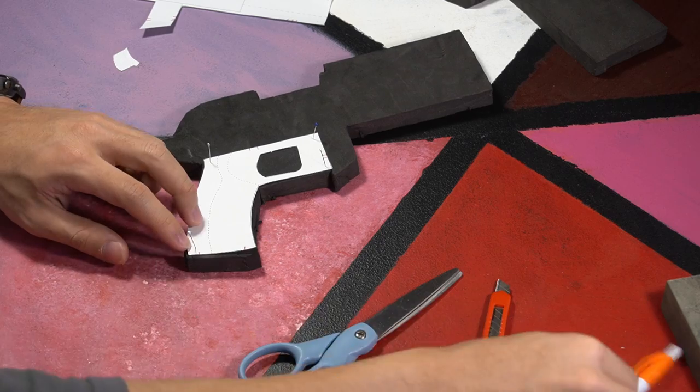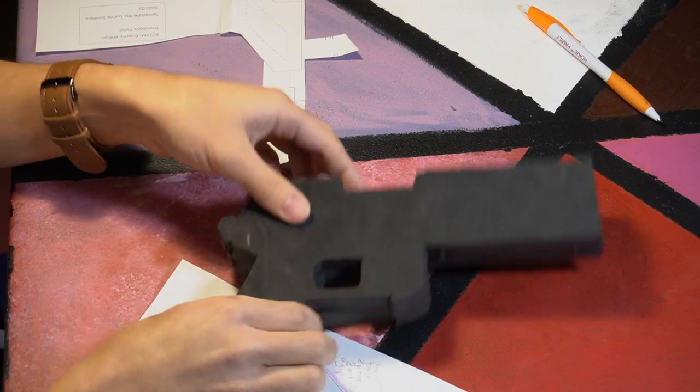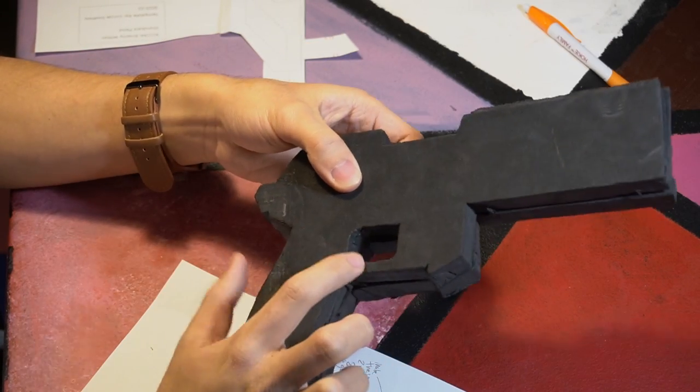Next, we'll want to cut out a hole for the trigger. Make sure you keep this piece of foam because you might want to actually use it for the trigger later.